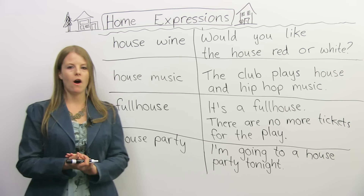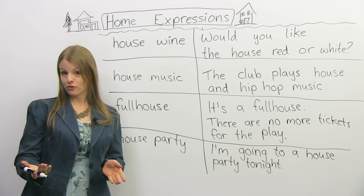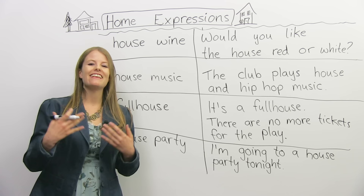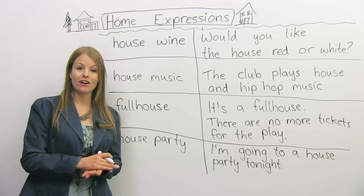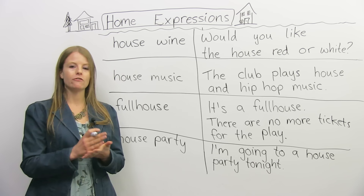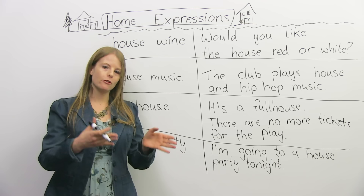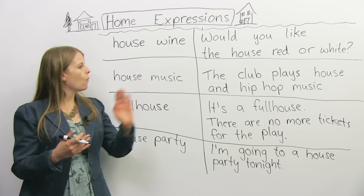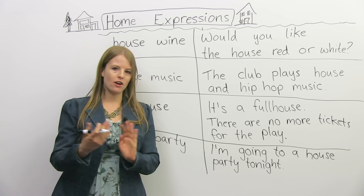The next expression is house wine. This is useful if you like going to restaurants or bars and you like to drink wine. The house wine is usually the cheaper wine at a restaurant. If you don't want to spend a lot of money and you want something recommended by the restaurant, you can ask for the house wine. They might ask: 'Would you like the house red?' — meaning the red wine that isn't that expensive — or 'Would you like the house white?'